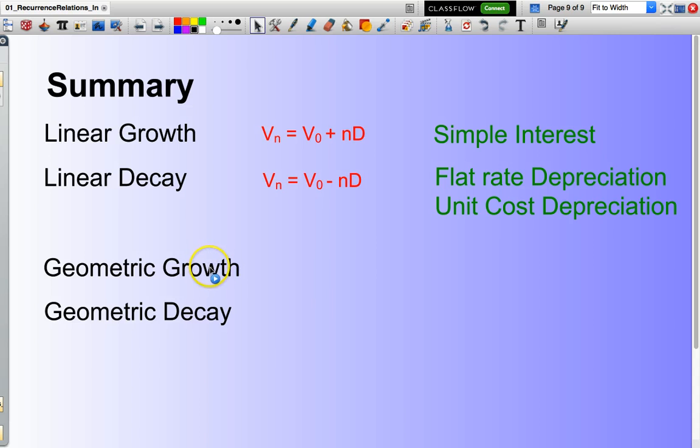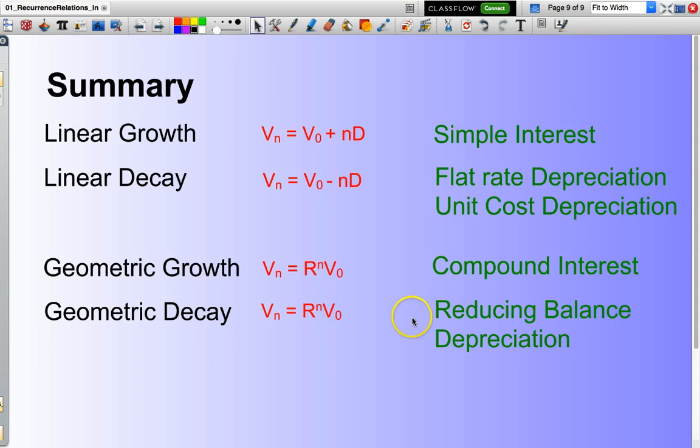Then we have geometric growth. This is a situation where we have R to the power of N multiplied by my initial value. The biggest example of that would be compound interest. And then we have geometric decay. This is where R is a value less than one. And the best example that we have there is reducing balance depreciation.